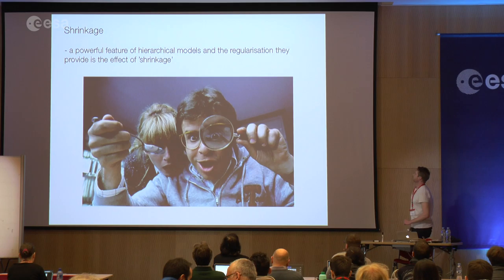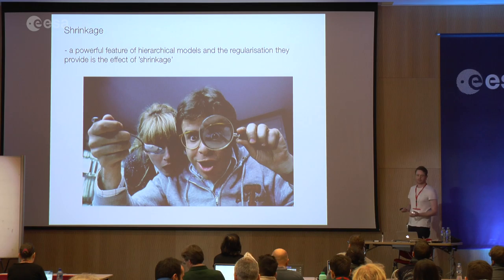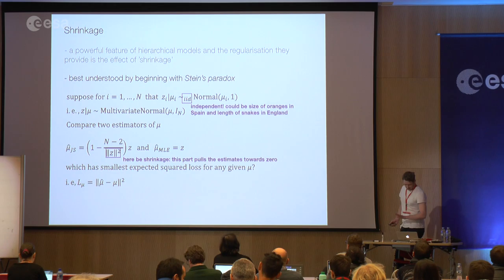This might seem like a dry technical topic, but the mistake of not accounting for transformations of densities is very easy to make, particularly when using powerful codes like Stan or JAGS that do all the sampling for you but don't explicitly guard against these user errors. The next topic is shrinkage — a very powerful feature of hierarchical models and the regularization they provide.